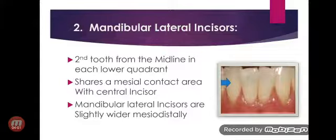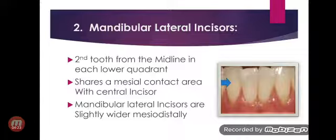The second subgroup is the mandibular lateral incisor. These are the second teeth from the midline in each lower quadrant and share a mesial contact area with the central incisor. Mandibular lateral incisors are slightly wider mesiodistally, which we can clearly see in the figure.